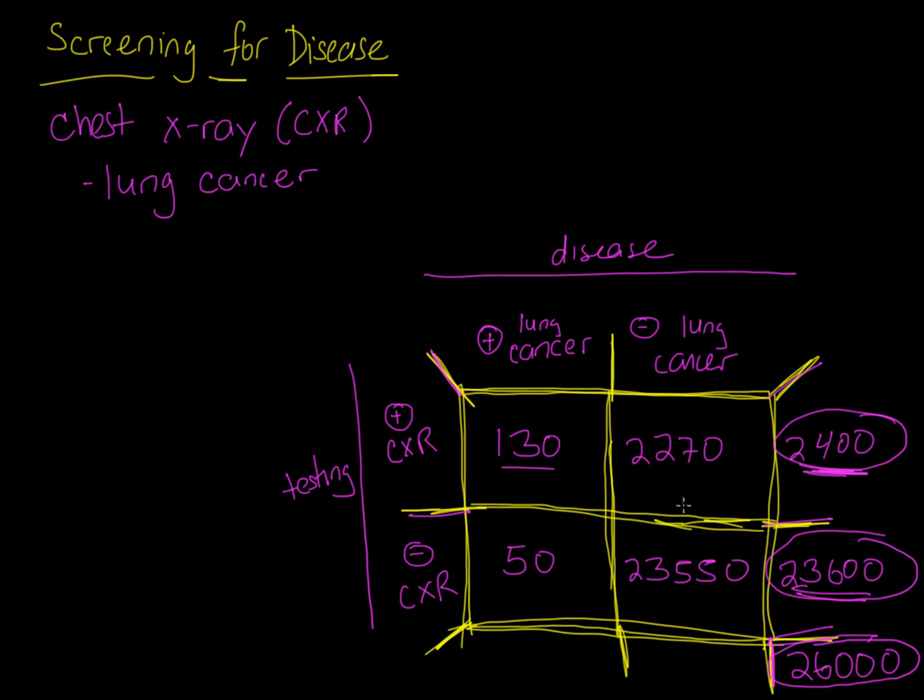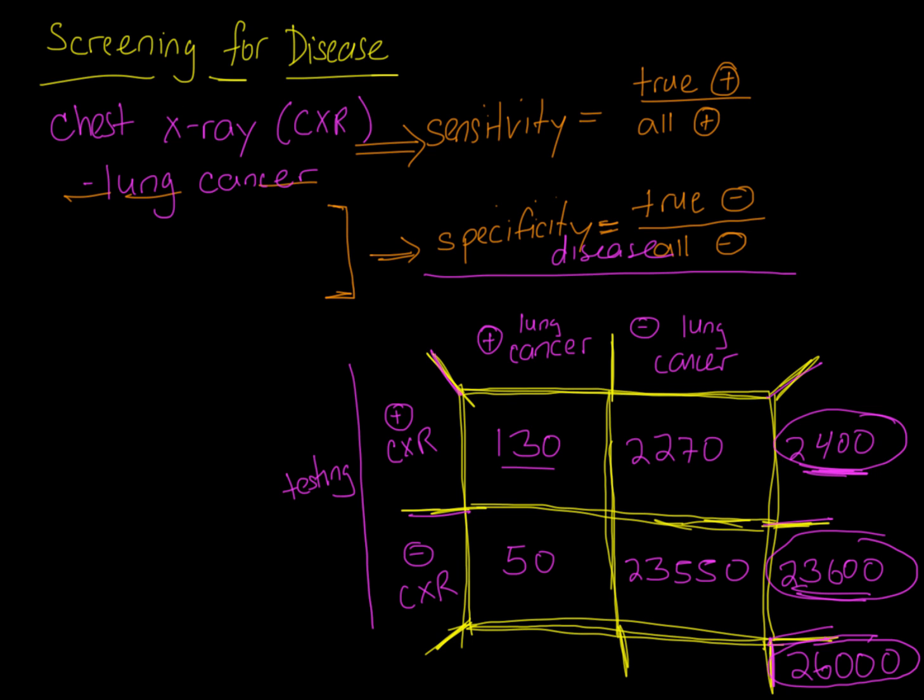So now we have all the numbers that we need to make an assessment about the sensitivity and specificity of a chest x-ray for lung cancer. Let's bring this back so we can remember how to actually calculate these things. Let's do the sensitivity first. The true positive, where are the true positives? Screen positive actually had the disease, 130. 130 over, now what are the all positives? The all positives are both of these together. And that's 180. So 130 over 180 equals about 72%. So that's about 72% sensitive, the chest x-ray for lung cancer.